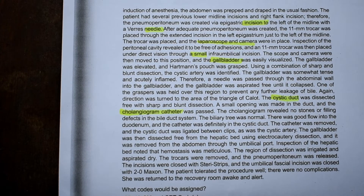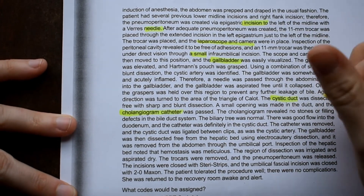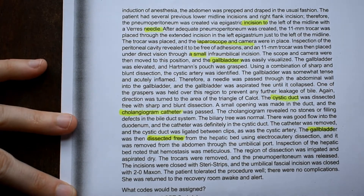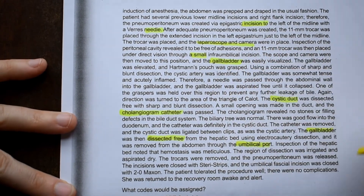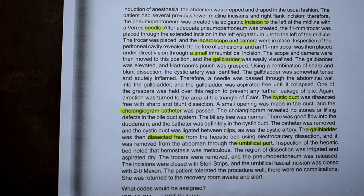So the cholangiogram catheter — that is for imaging purposes — so we may possibly be doing a separate code just for that. The biliary tree was normal, there was good flow into the duodenum, and the catheter was definitely in the cystic duct. The catheter was removed and the cystic duct was ligated between clips, as was the cystic artery. The gallbladder was then dissected free from the hepatic bed using electrocautery dissection and it was removed from the abdomen through the umbilical port. So they are removing the entire gallbladder. Now we know the gallbladder is a little bit big, so we may be doing an open approach — or we'll have to figure out if it's percutaneous endoscopic or open, but with the use of a port, are we going to consider that via natural or artificial opening since ports are artificial? We will see when we are done.